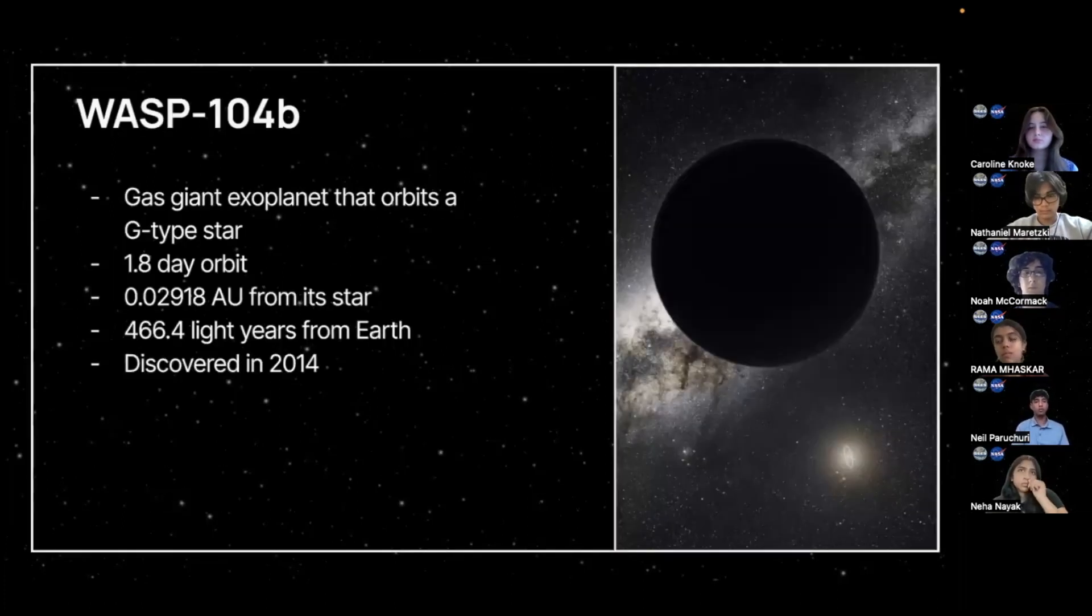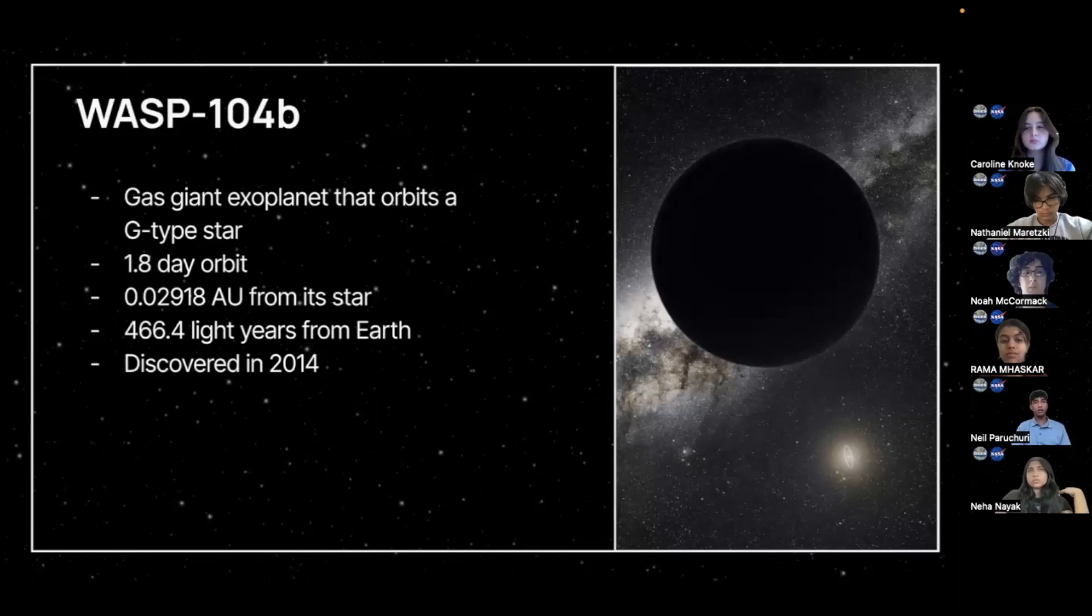Now, throughout the project, we studied three planets. Firstly, we studied WASP-104b. WASP-104b is a gas giant that orbits a G-type star. A G-type star is the fifth brightest star and is usually a yellow or yellow-white color due to its temperature. For example, our sun is an example of a Class G star. WASP-104b has a 1.8-day orbit around its star, and it is 0.0291 AU from its star. And 1 AU equals 93 million miles. WASP-104b is also 466.4 light-years from Earth, and it was discovered in 2014 on the Kepler-2 mission.